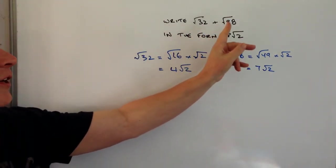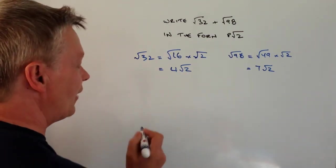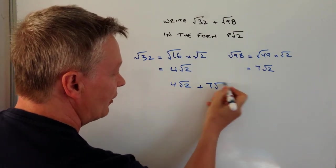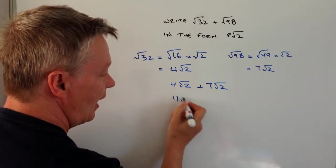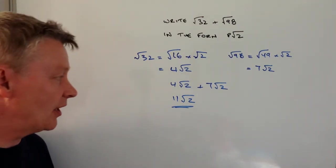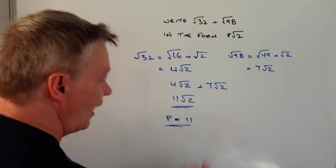Okay, well I've got root 32 plus root 98, in other words I can add these two together. So 4 root 2 plus 7 root 2 is going to be 11 root 2, and that will answer this particular question where P, which is this integer, is the value of 11.